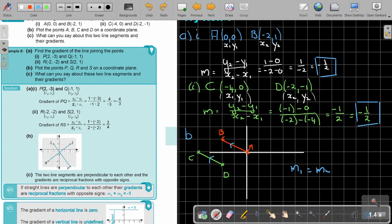What can you say? So let's just write it here. Number C. Gradients are equal. Therefore, the lines are parallel. And that is how you do that.